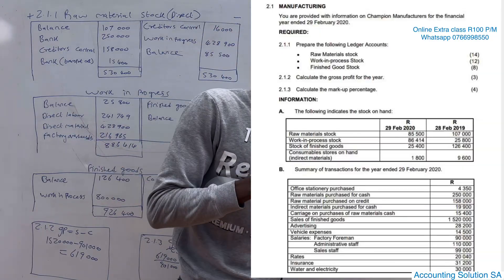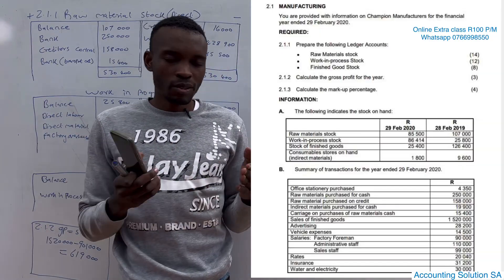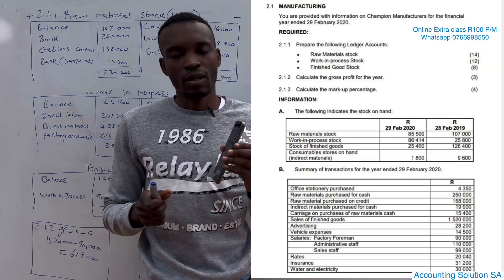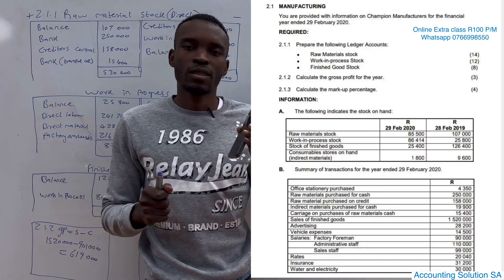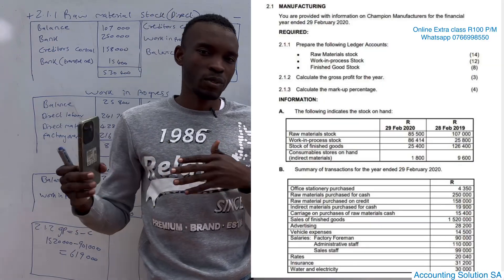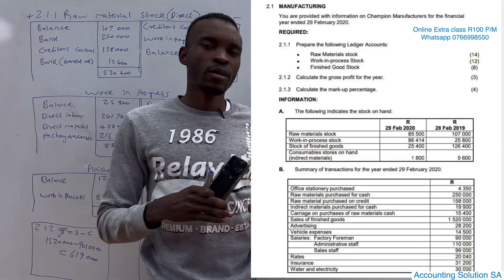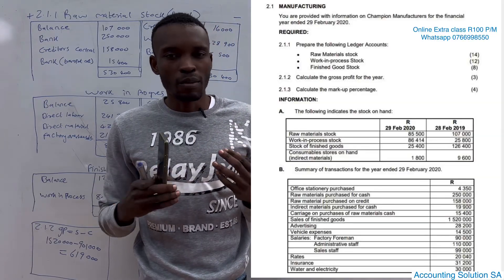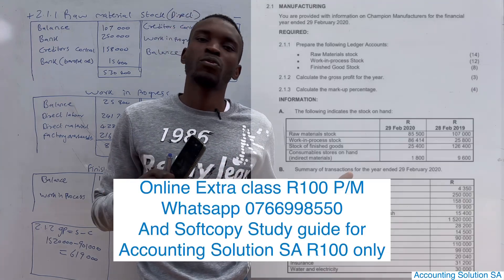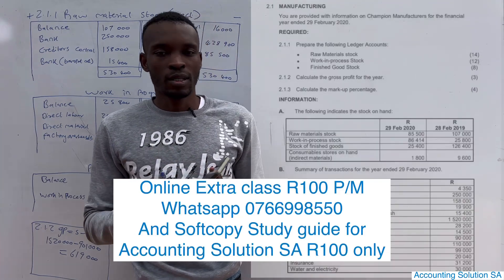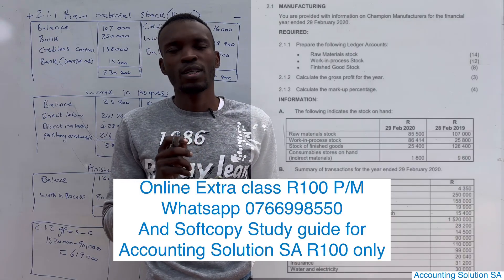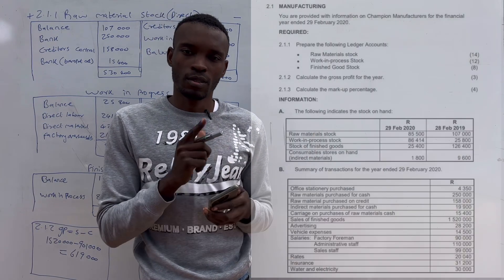If you want a similar question like this, make sure that you purchase our study guide for only R100. Just text us on WhatsApp requesting the guide, make a payment, and we'll send you a soft copy. The hard copy is not available at the moment because printing and delivery is very expensive. I hope you enjoyed and learned something. Don't forget to subscribe to this channel to watch more videos. See you next time.